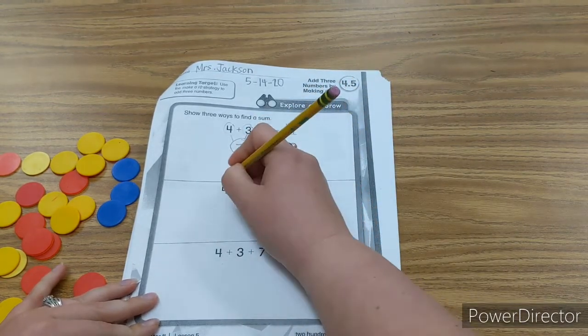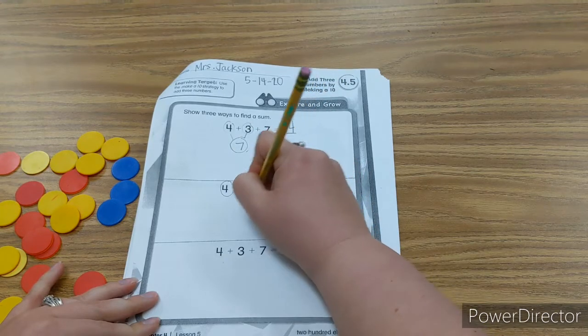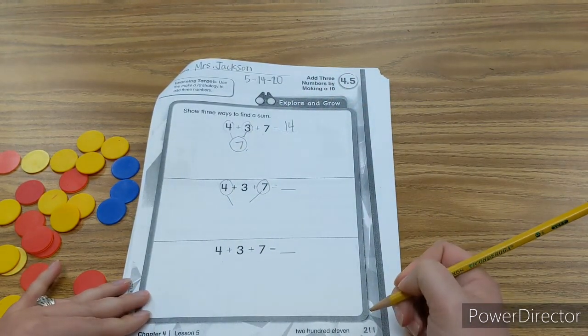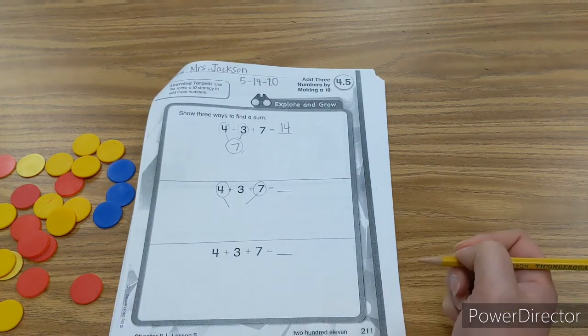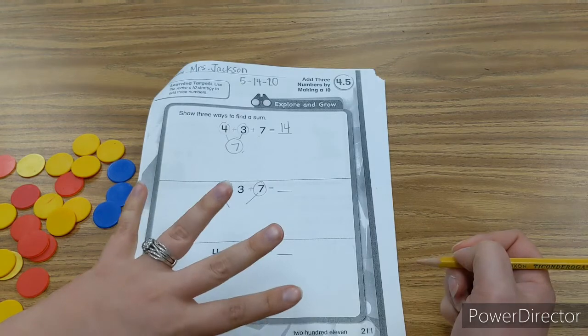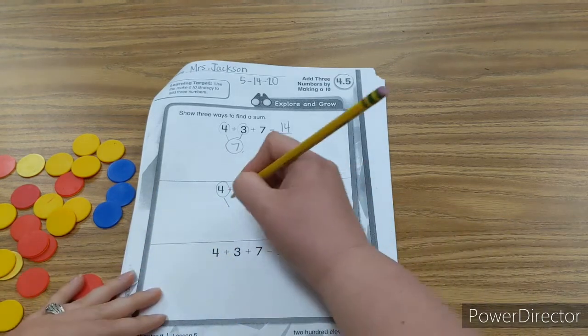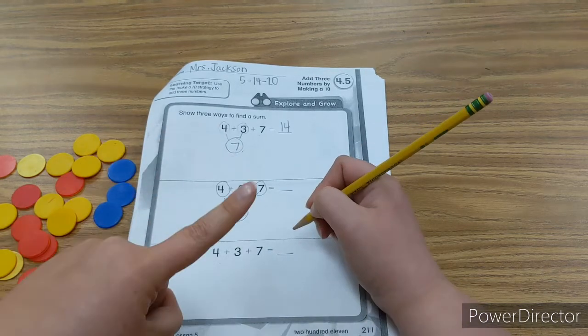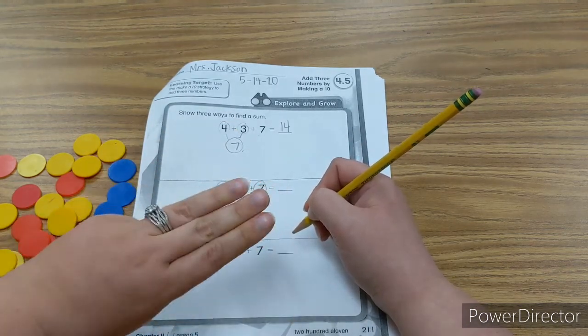Now we could do 4 and 7 first. So 7 plus 4. I put 7 in my head. 8, 9, 10, 11. So that's 11. 11 and 3 more. 11, 12, 13, 14.